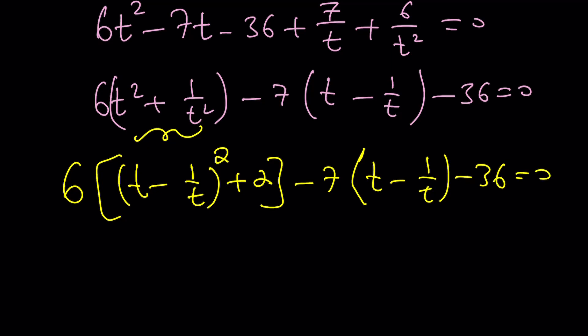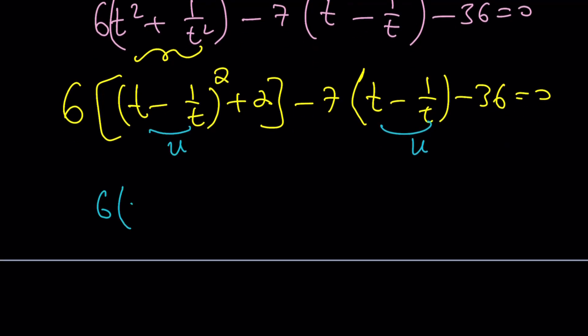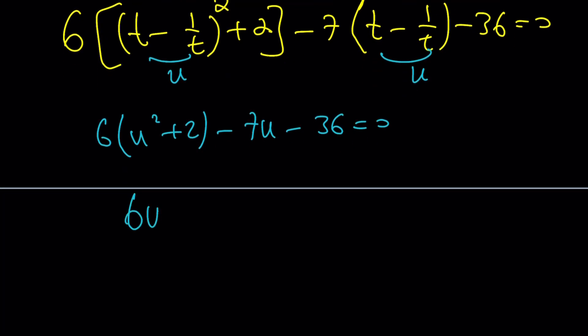Now we can go ahead and call this something. How about, I don't know, U maybe? And let's call that U. 6 times U squared plus 2 minus 7U minus 36 equals 0. And this just becomes quadratic. Beautiful.